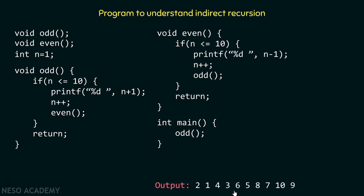The expected output is: 2, 1, 4, 3, 6, 5, 8, 7, 10, 9. Now let me simulate this code with the help of a stack, which is what we usually do when we analyze recursive programs.